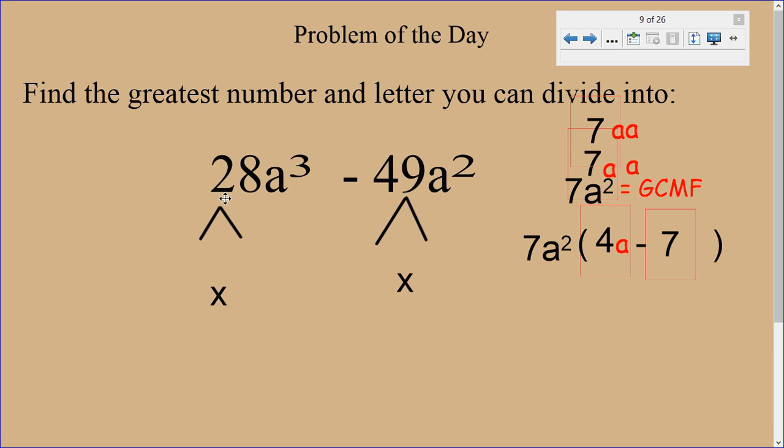So if you distribute, you'll see that. So I have 7 A squared times 4 A minus 7. That would be what's called factored form, and you'll learn more about that later on.